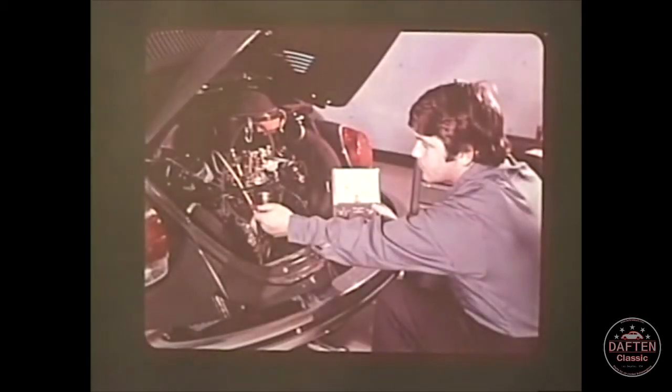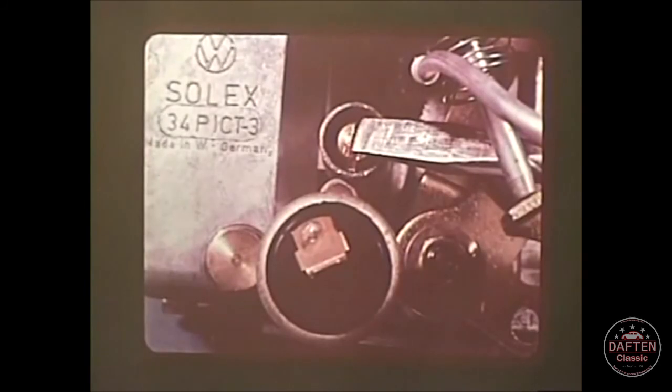To adjust the idle speed, simply connect a tachometer to the engine, first making sure the ignition timing is right and that the engine is at operating temperature. Then turn the large air bypass screw until the engine is at the correct RPM. This automatically changes the fuel air mixture to compensate for the changed RPM.